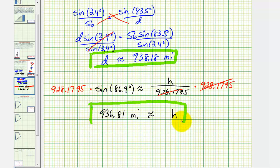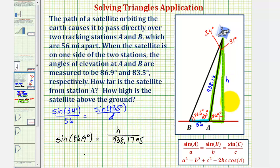So going back to our sketch one last time, we just determined the height of the satellite to be approximately 936.81 miles. This is miles and so is this. I hope you found this helpful.